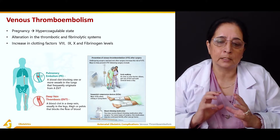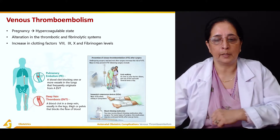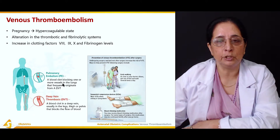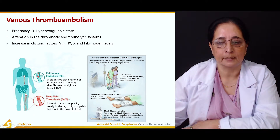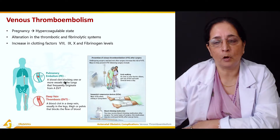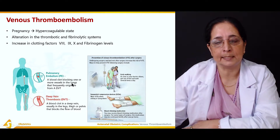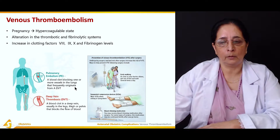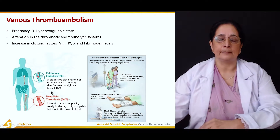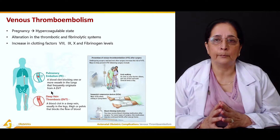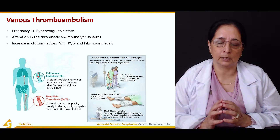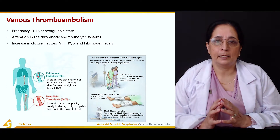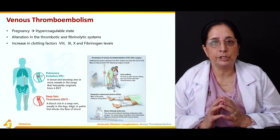When the embolus goes into the lungs it causes obstruction, leading to pulmonary embolism — a serious condition causing shortness of breath. A blood clot blocking one or more pulmonary vessels frequently originates from DVT. Pulmonary embolus causes dyspnea and must be managed urgently.